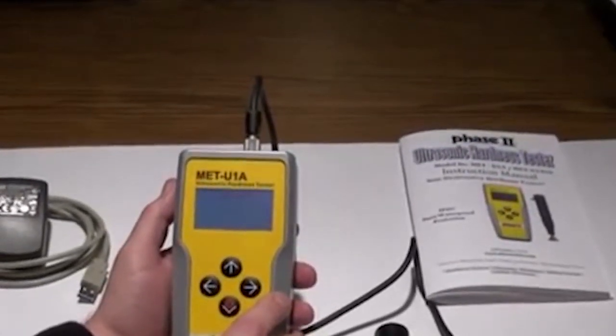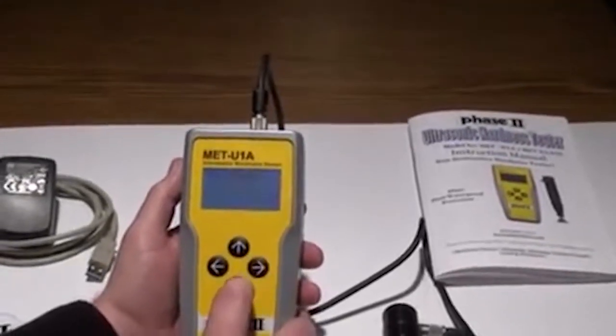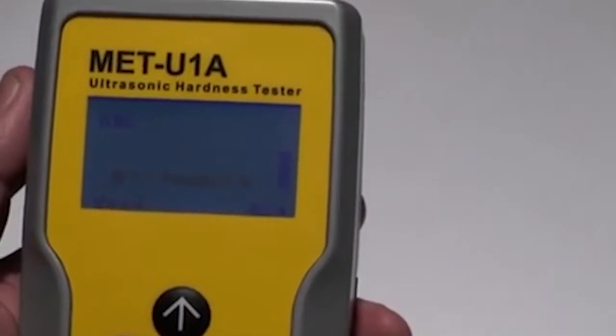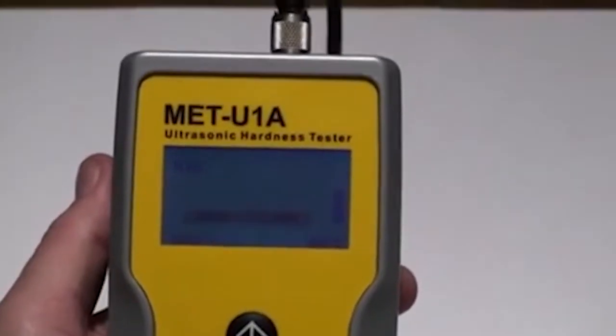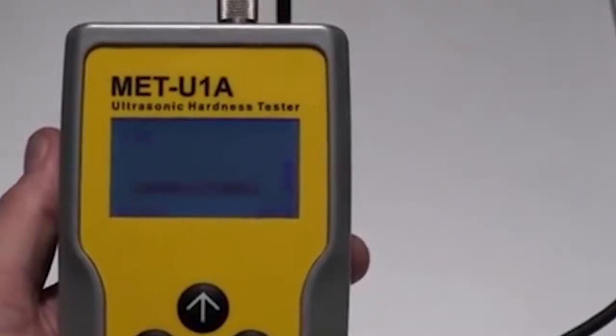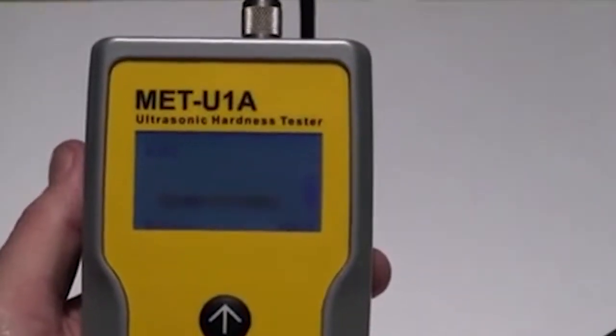Clicking down after the confirmed scale is selected will allow you to test in that scale. Once clicking the down arrow to select your scale, you will now see the test blinking with arrows. This is the center point of the menu system.